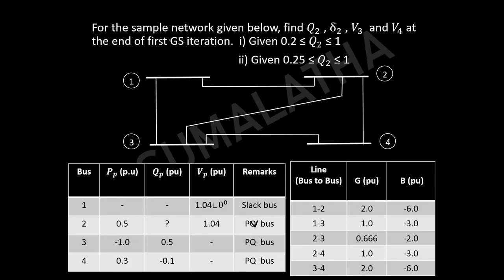Now coming to the problem statement: for the sample network given below, find Q2 and del 2 for the PV bus, and V3 and V4 for PQ buses at the end of first GS iteration. Here they have given two Q limits. The first Q limit is 0.2 ≤ Q2 ≤ 1, and the second condition is 0.25 ≤ Q2 ≤ 1.